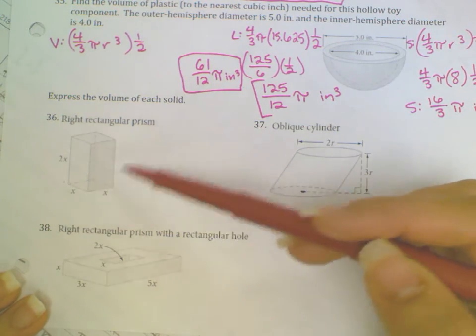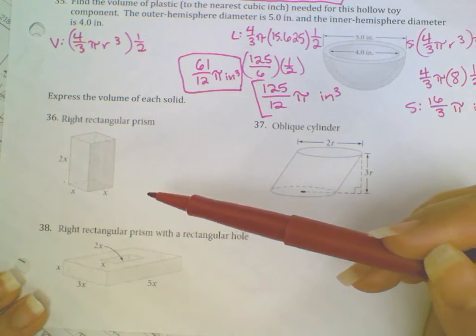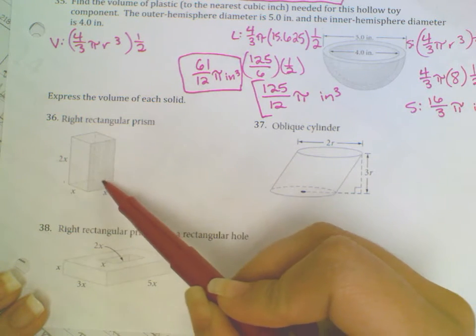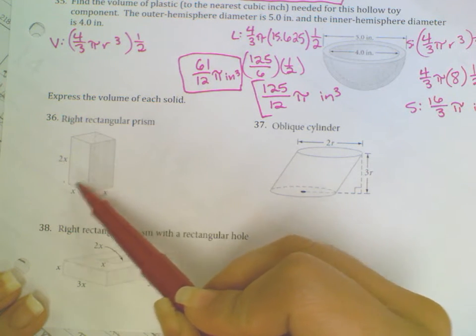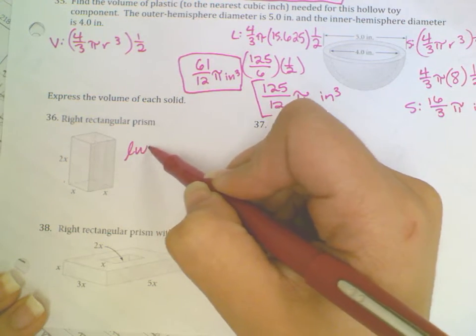If I'm trying to find the volume of a rectangular prism, I'm going to be doing the area of the base, which in this case is a square, times the height, or length times width times height.